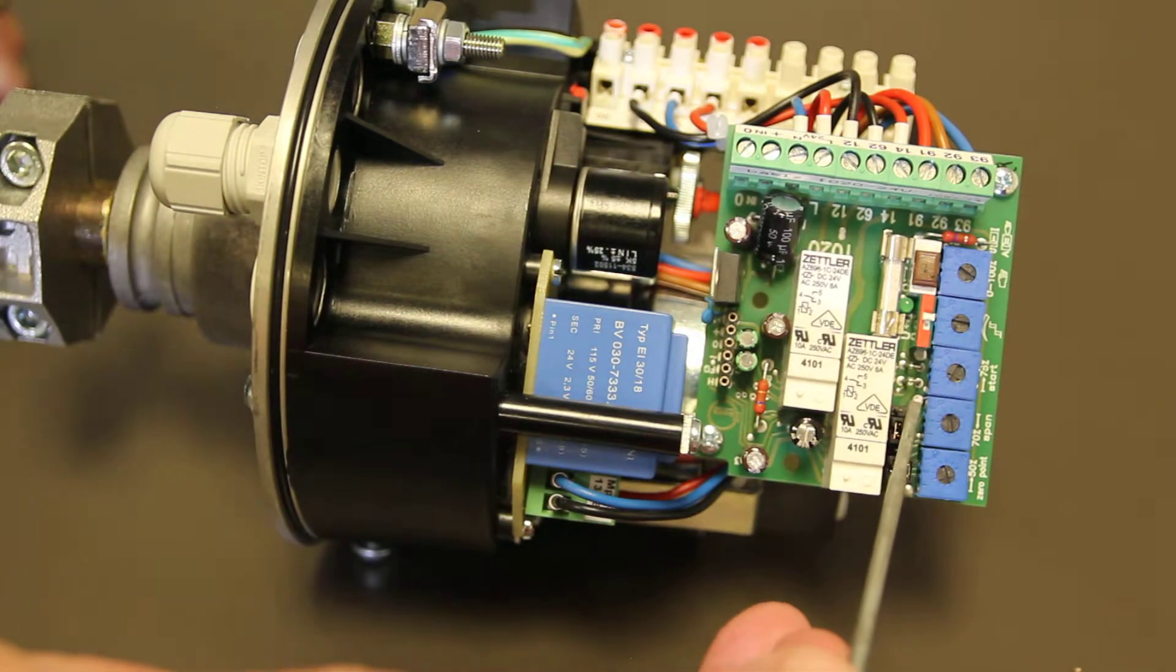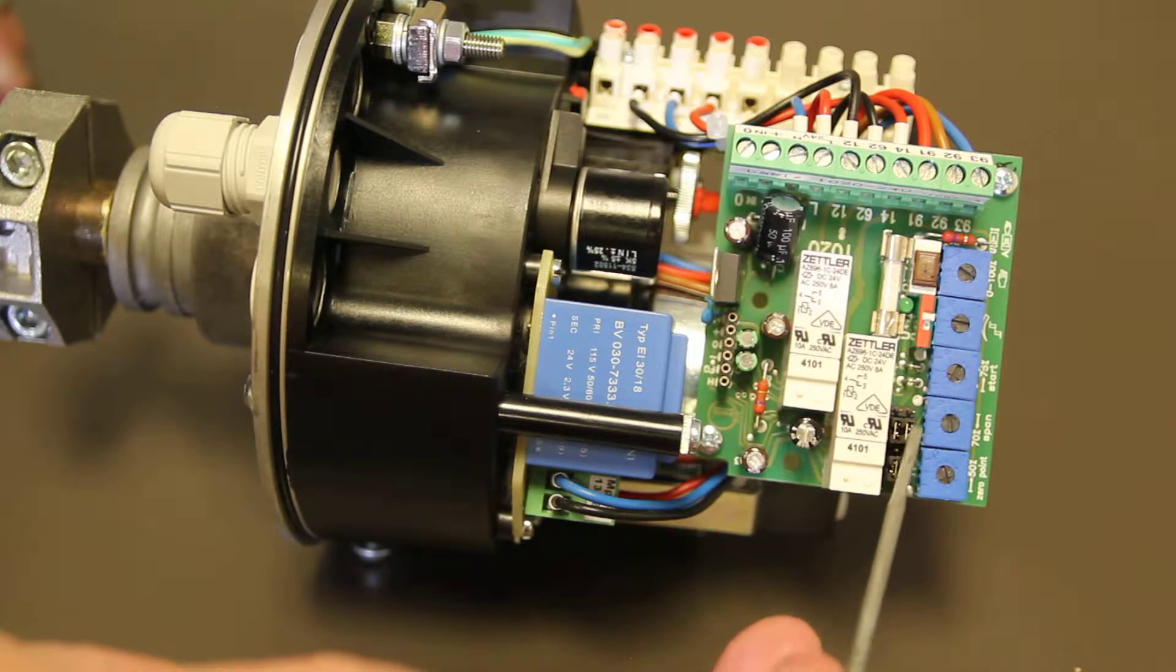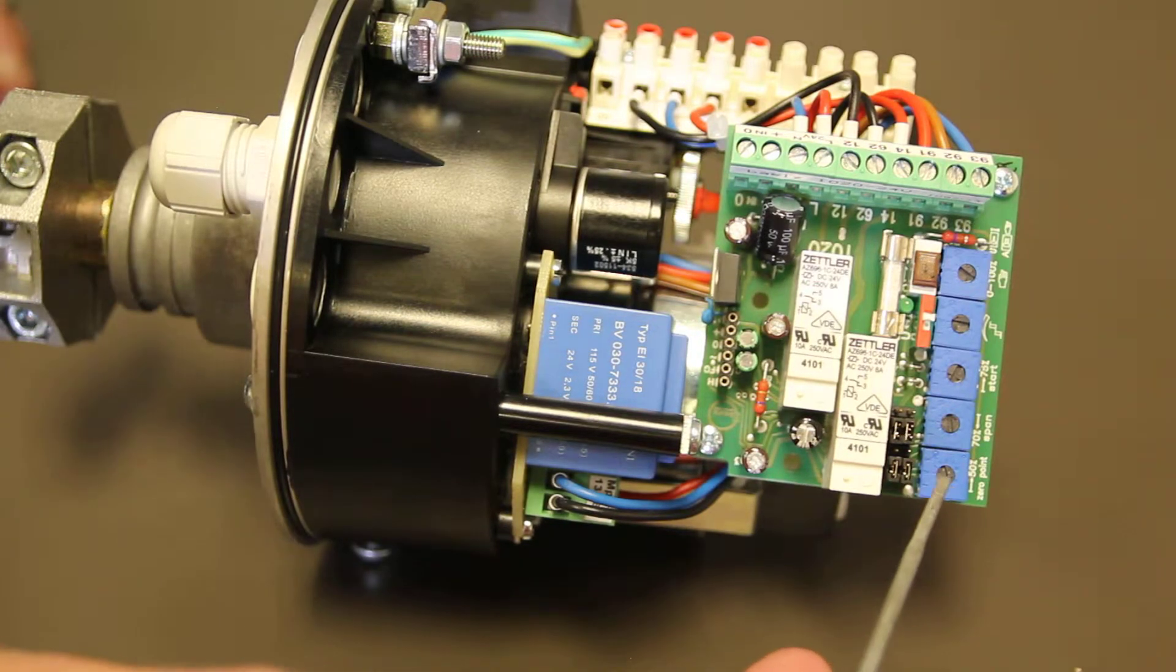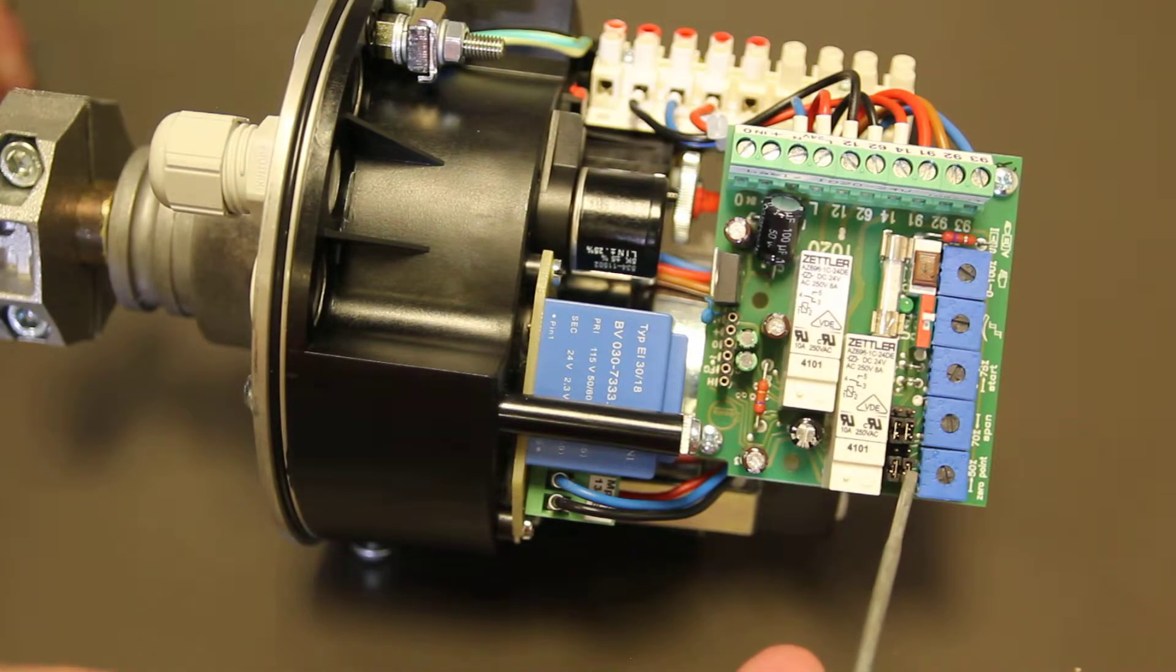On the older models, right here on the servo amp board, the 1020 board, there used to be a manual switch. You could move it from the left side to the right side. In our operating instructions, our main manual for this actuator, it still shows that in one of the diagrams.